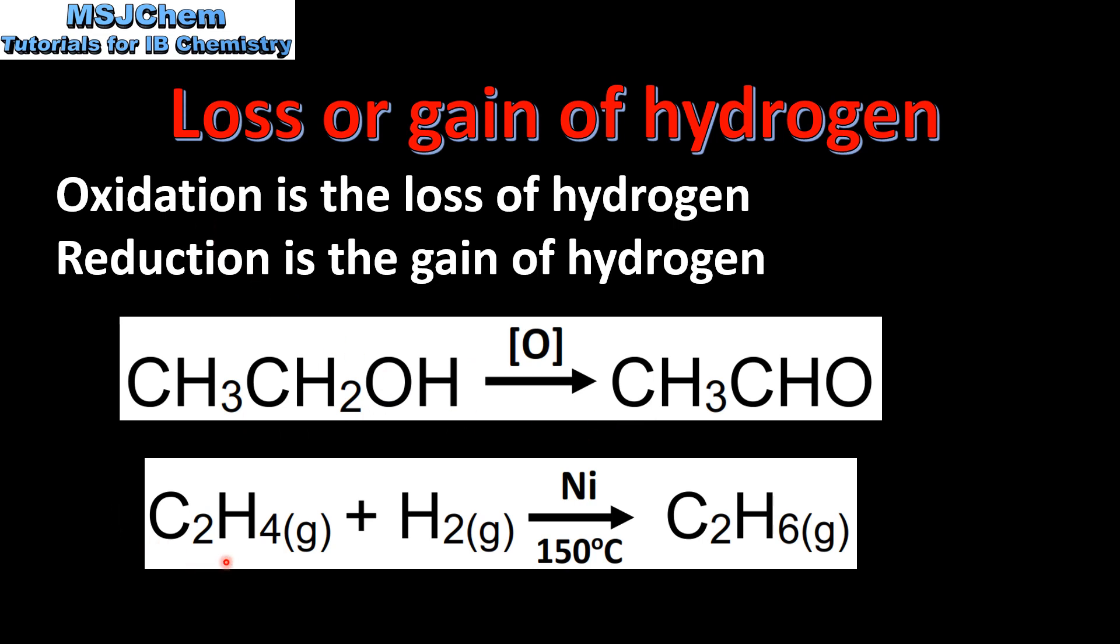In the second reaction we have ethene reacting with hydrogen in the presence of a nickel catalyst at 150 degrees to form ethane. The ethene is gaining hydrogen which is reduction.